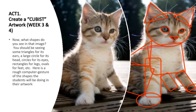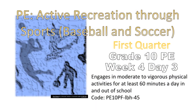Look at the image — what shapes do you see? You should be seeing triangles for ears, a large circle for the head, circles for eyes, rectangles for legs, ovals for feet, etc. Here is a rough computer gesture of the shapes students will be doing in their artwork.